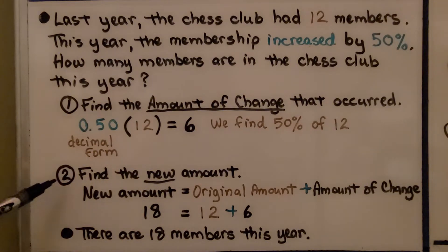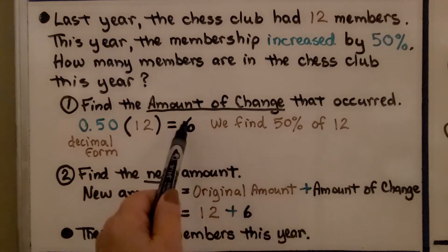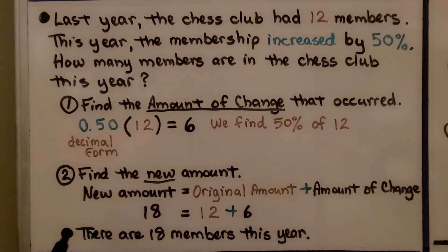The second step is we find the new amount. The new amount equals the original amount plus the amount of change. That means we have 12 plus 6, that's 18. There's 18 members this year. We did plus the amount of change because it was an increase.